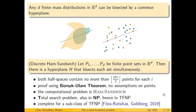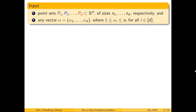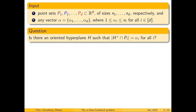Recently it was also shown that this is complete for a subclass of TFNP. Let us now ask a more general question. Given those point sets, each assigned a unique color, and a vector alpha where alpha_i is at least one and at most the size of n_i, the natural question is: can we find a hyperplane H with some orientation so that the positive half space contains exactly alpha_i points of p_i for all i?